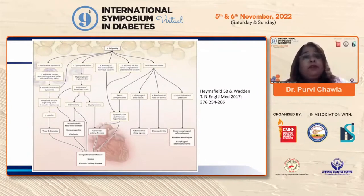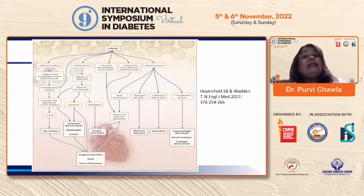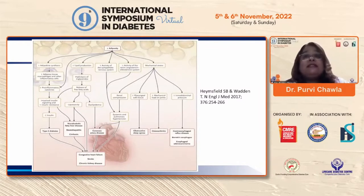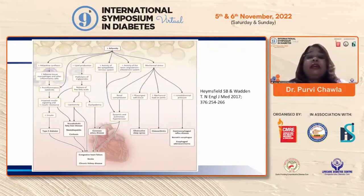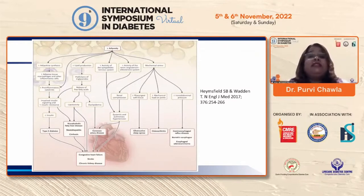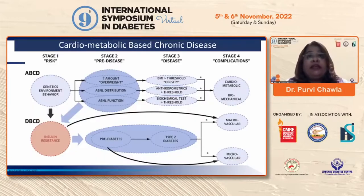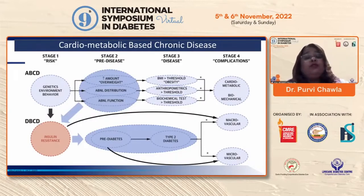There is increased lipid production, leading to lipotoxicity and dyslipidemia, and then an increase in the activity of the sympathetic nervous system as well as the renin-angiotensin-aldosterone system. The mechanical stress of increased weight itself — all of these together lead to the manifestation of so many different complications.